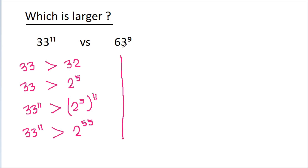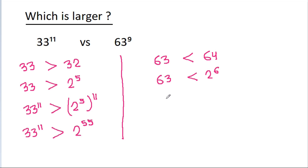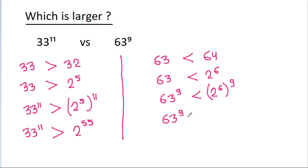And 63 is closer to 64, and 63 is less than 64, which is 2 power 6. And we have 63 power 9, so 63 power 9 will be less than 2 power 6 power 9, which is 2 power 54.